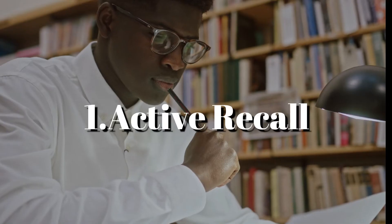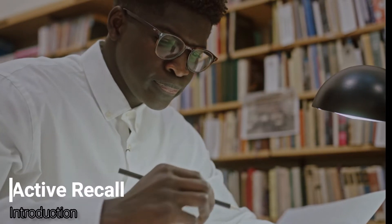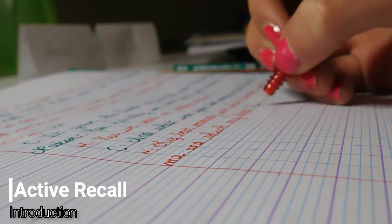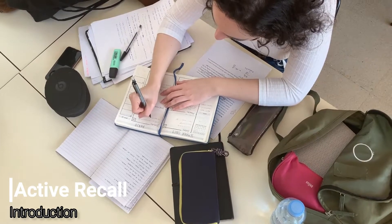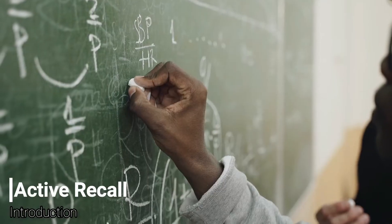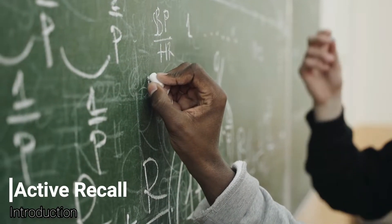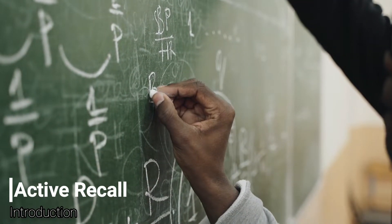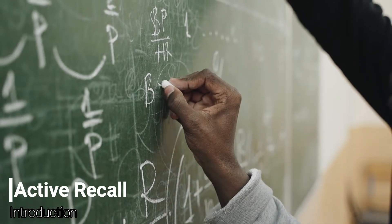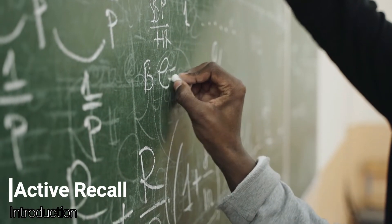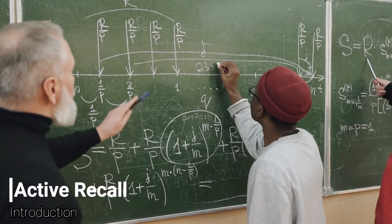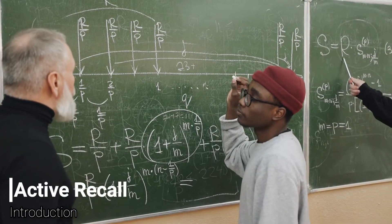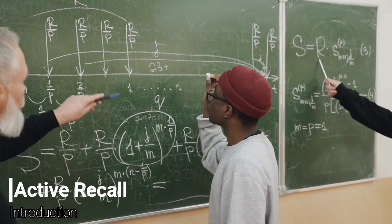First, active recall. In this method, we have a question and answer format. Basically, we can add information to the brain. For example, we can add a formula and apply it. We can input information into the brain this way.